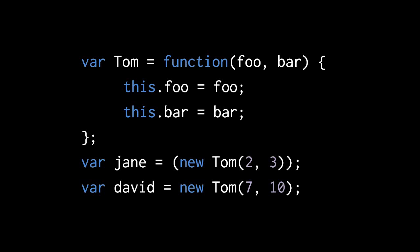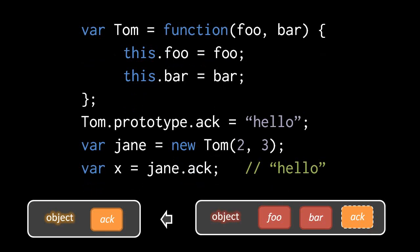The new operator does one more special thing. All function objects in JavaScript have a special property called prototype, and when you create a new function, its prototype property is just an empty object. What's special is that when we call the function with new, that new object that gets created is linked to the object in prototype. So here we have the same function tom, except now we're giving its prototype object a property ac with the value of the string hello. So when we call tom with new, the object that gets returned to jane has a link to that prototype object, and the expression jane.ac returns the string hello.